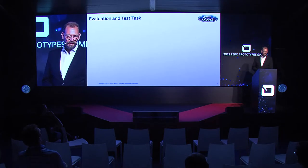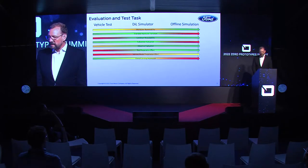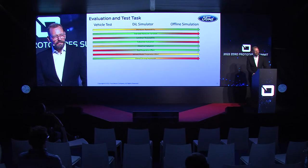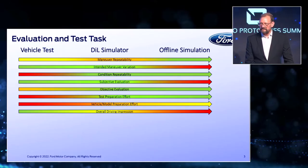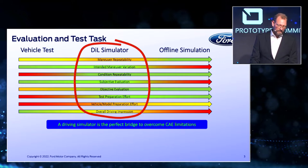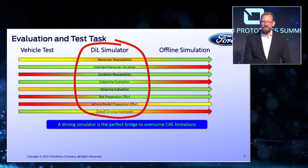So we thought about the attributes of our evaluation and test tasks, and I would like to compare the vehicle test to the offline simulation, and in that discussion we put a DIL simulator in the middle. When you look at these attributes, you see many bars which range from green to red, some in opposite directions. We found that for many of those cases, the DIL simulator in the center has pretty good shape. That led to our conclusion that the DIL simulator would be a really good bridge to combine vehicle testing with offline simulation. But to get useful results out of the DIL together with the offline simulation, it's mandatory to have a continuous toolchain between both.